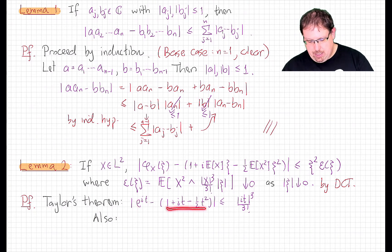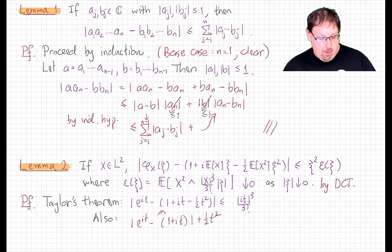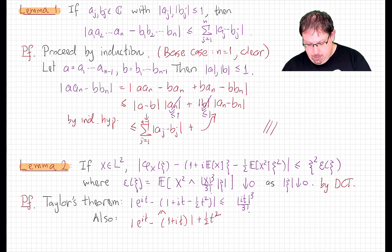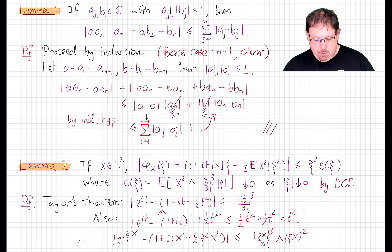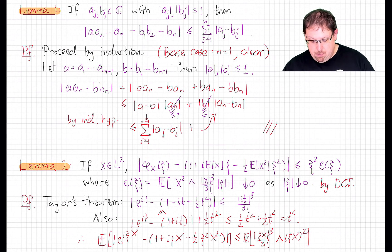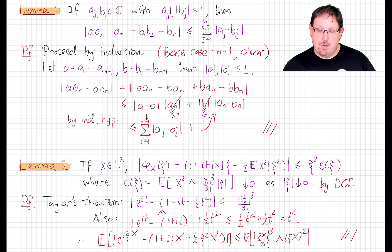Proving this bound is really just Taylor's theorem with remainder. Expanding to second order, the difference is less than or equal to the absolute value of the next term in the Taylor series. At the same time, using the triangle inequality to break off a term and applying Taylor's theorem with remainder to the first-order expansion of e^{it}, that part is also less than or equal to ½t². So for every t this quantity is at most the minimum of those two bounds. Applying that with t = ξx pointwise and taking the expected value, the bound follows, concluding the proof. Now, to prove Lindbergh's central limit theorem, using the continuity theorem as with the basic CLT, we show that the characteristic function of the sum of the nth row converges to the characteristic function of a standard normal.